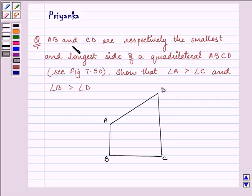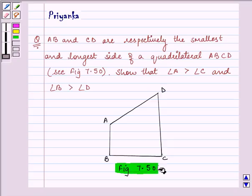It says AB and CD are respectively the smallest and longest side of a quadrilateral ABCD. See figure 7.50. Show that angle A is greater than angle C and angle B is greater than angle D. This is figure 7.50 which we need to refer.